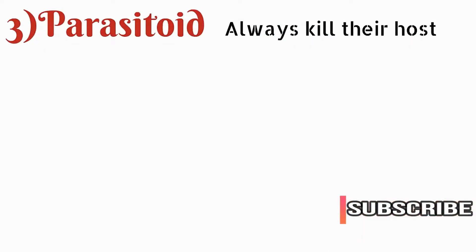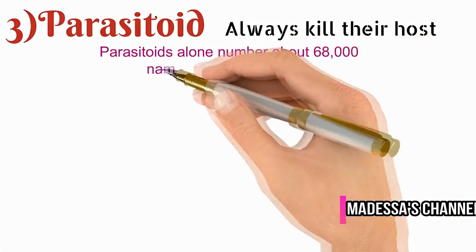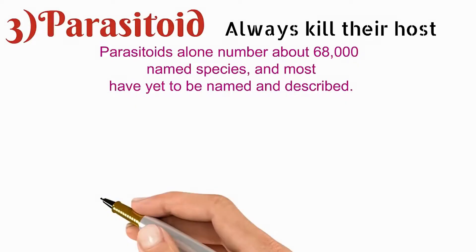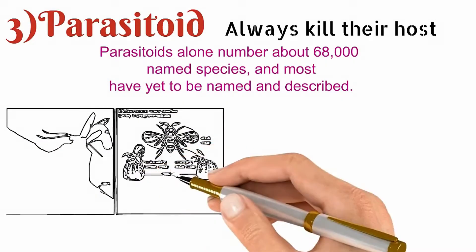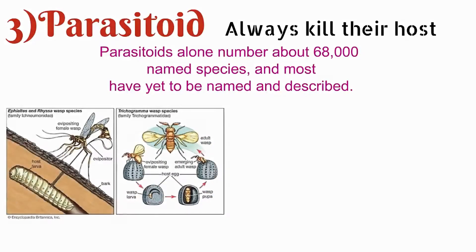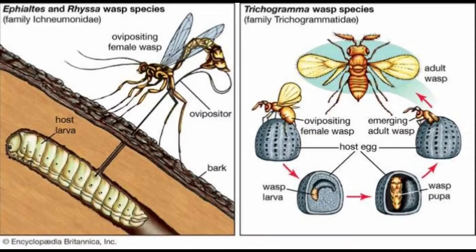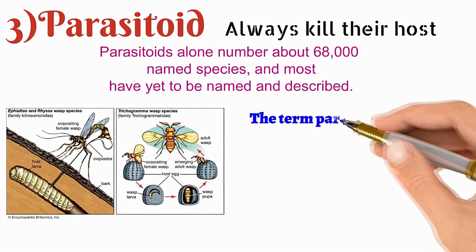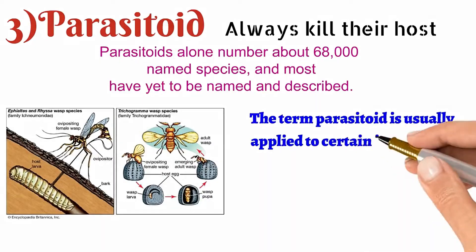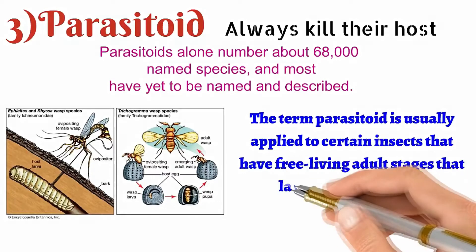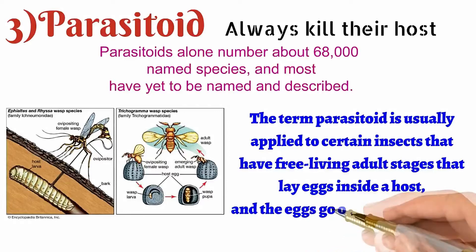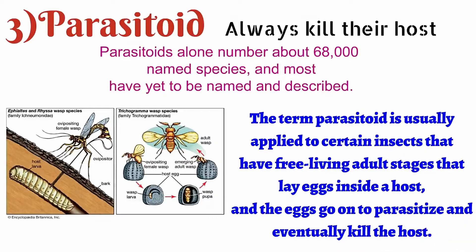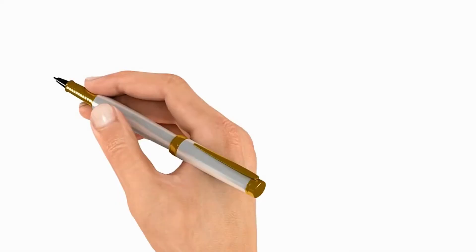Now we can see the parasitoid. What is a parasitoid? A parasitoid is a type of parasite, but a parasitoid does always kill their host, unlike a parasite which does not kill. There are 68,000 species of parasitoids. Here we can see the Trichogramma wasp species — it is laying eggs, ovipositing, into the host larval species, and the larvae eventually kill the host as the adult wasp emerges. The term parasitoid is usually applied to insects that have a free-living adult stage that lay eggs inside a host, and the eggs parasitize and eventually kill the host.